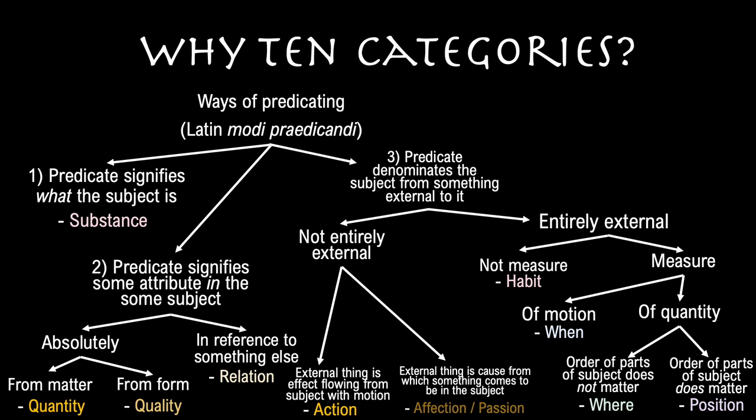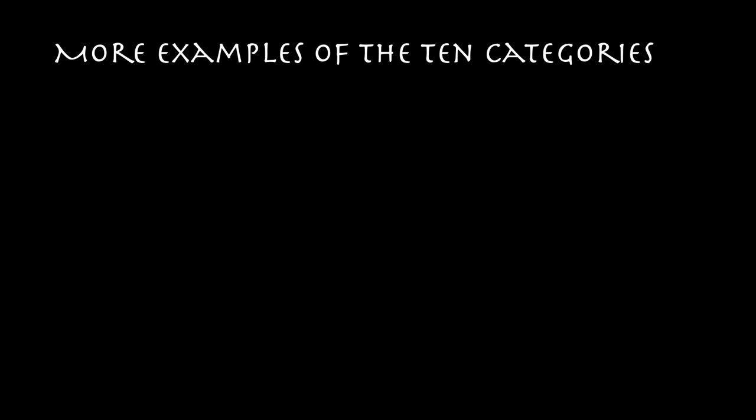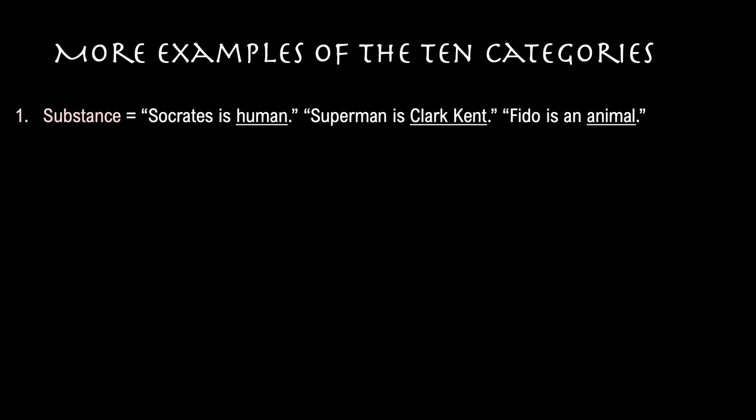That's ten categories. Thank you, St. Thomas. Let's look at a few more examples of each of the ten categories, since Aristotle doesn't give us too many. Here are some examples of the first category, substance: 'Socrates is human,' 'Superman is Clark Kent,' 'Fido is an animal.' The predicates in each of these sentences signify substance because they signify what a subject is. Human signifies the species of Socrates; Clark Kent is a primary substance signifying the exact same individual as Superman. Animal signifies the genus of Fido. So species, genera, and primary substances are all in the genus substance.